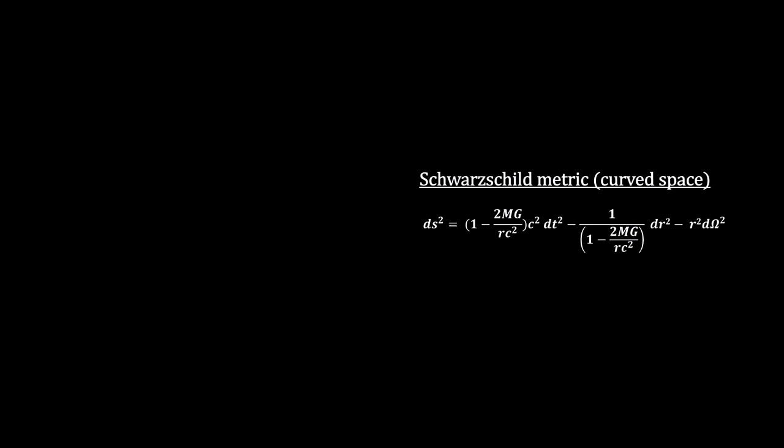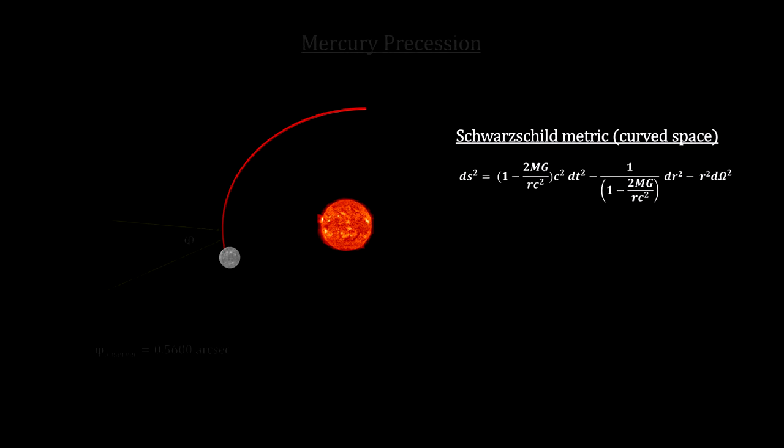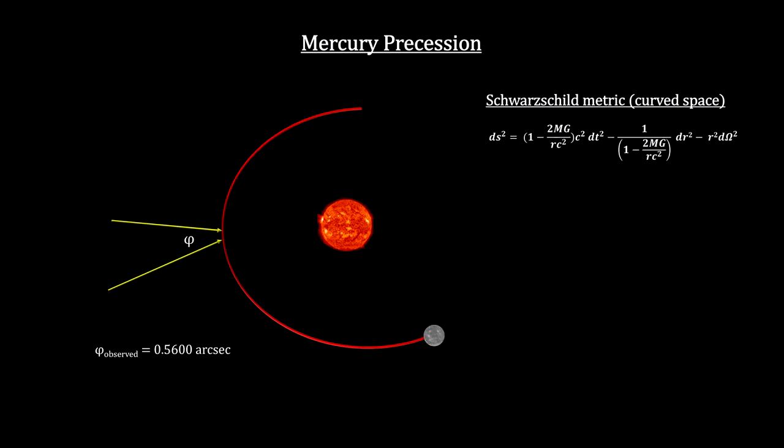As seen from Earth, the precession of Mercury's orbit is measured to be 0.56 arcseconds per orbit. An arcsecond is 1/3600th of a degree. Taking into account all the perturbation effects from all the other planets, as well as a very slight deformation of the Sun due to its rotation, and the fact that the Earth is not an inertial frame of reference, Newton's equations predict a precession of 0.5557 arcseconds. That's 0.0043 arcseconds short.